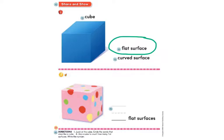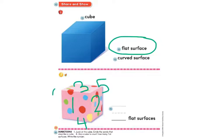Let's move down to number two — use a cube to count how many flat surfaces, and we're going to write the number. Now if you have a cube at home, you can count your cube at home. On this lesson we're going to count the ones we can see first. On this pink cube, we have one side here, two flat surfaces, three. And then we have some we can't really see: four on the bottom, five on the back, and six on the other side. A cube has six flat surfaces, so I'm going to write the number six.